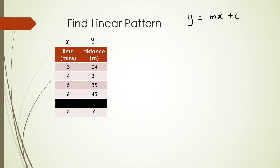I'll use d for distance and t for time, so the equation becomes d = mt + c. First, I need to check that the distance values go up by the same amount: 24 to 31 is +7, 31 to 38 is +7, and 38 to 45 is +7. I should also check the time column: 3 to 4, 4 to 5, and 5 to 6 are all +1. Both columns increase by constant amounts, confirming it's a linear pattern. The gradient m = 7.